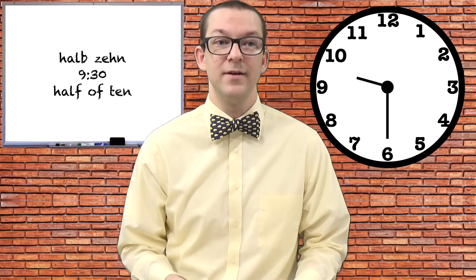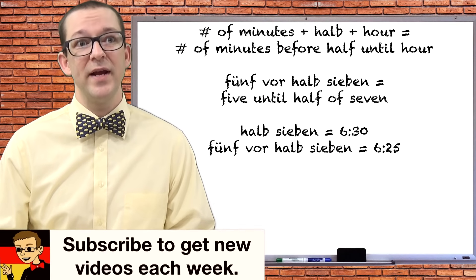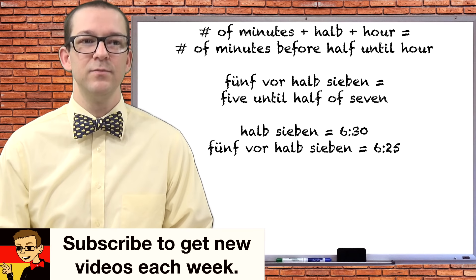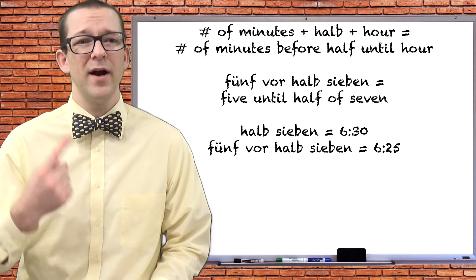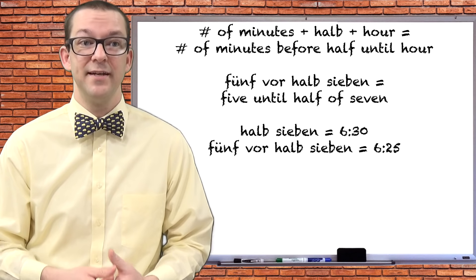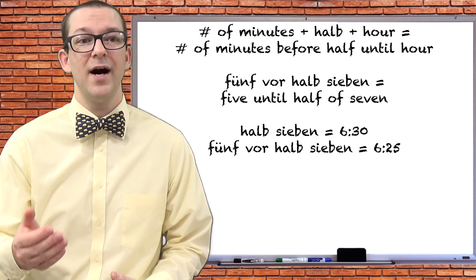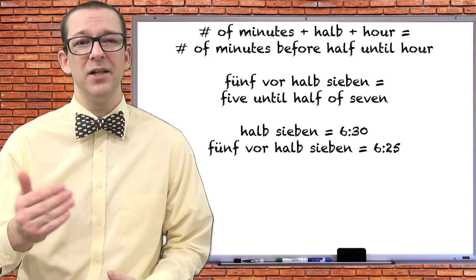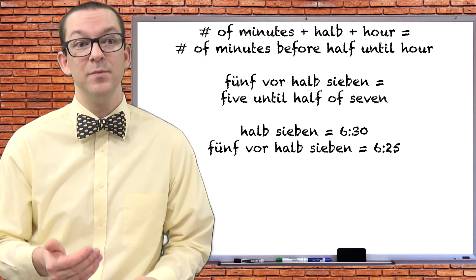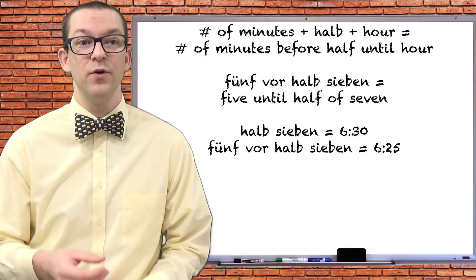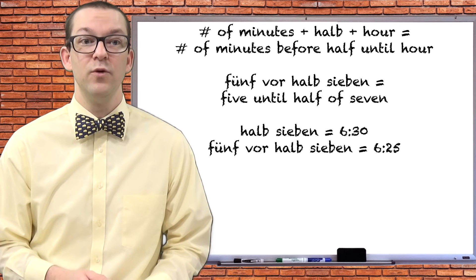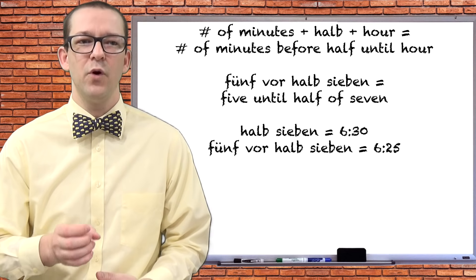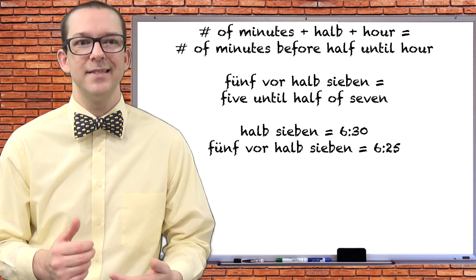A strange version of this would be to include vor or nach and a number of minutes, usually five or ten. This requires you to do a quick math problem in your head if you're an English native speaker. Fünf vor halb sieben, for example, would translate as five till half of seven. Halb sieben is 6:30, so fünf Minuten before that would be sechs Uhr fünfundzwanzig. So, fünf vor halb sieben is actually 6:25.